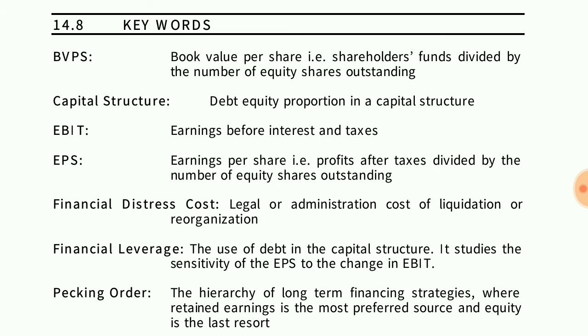So let's see what the first point is. The first point is BVPS, which means Book Value Per Share. What is a book value of a share? So you understand that. If a company's value is 1,000,000, then it will be divided accordingly.